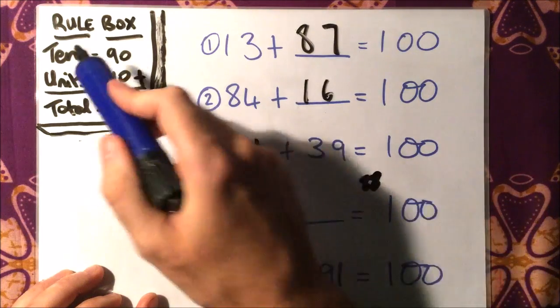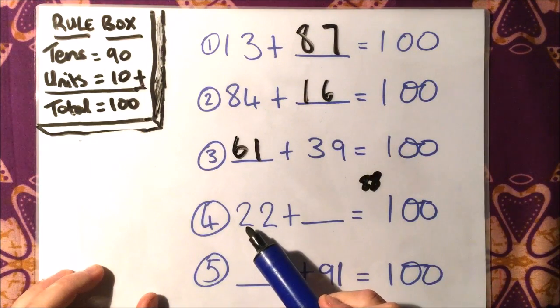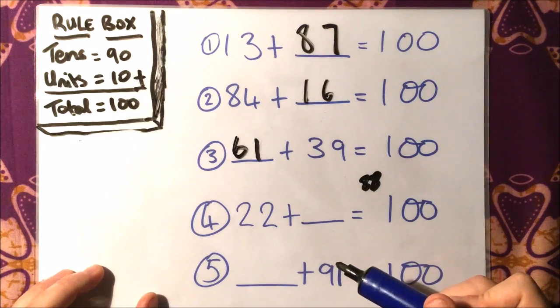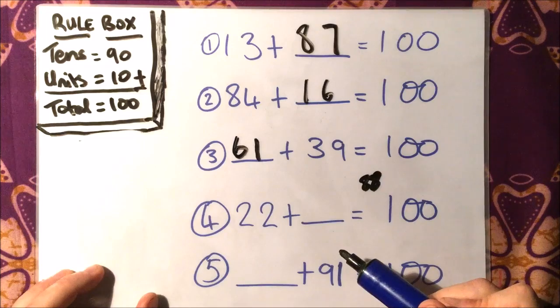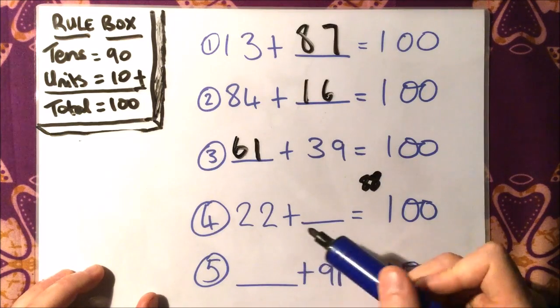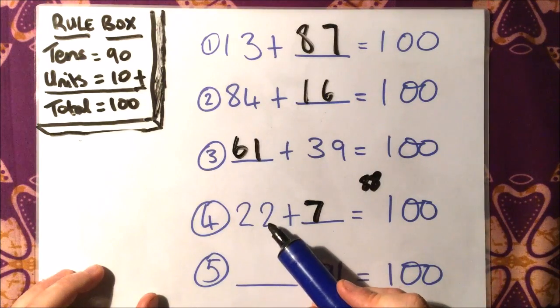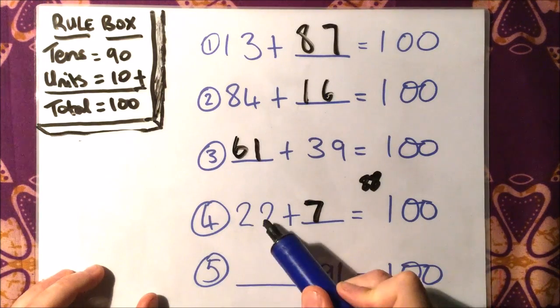Let's go through the rule box and see if that's correct. What do I need to add to 20 to make 90? I know that I need to add 2 and 7 together, that makes 9, so 20 add 70 together makes the 90. And then I need to add 8 to my 2 to make the 10, so 22 add 78 will give me the total of 100.